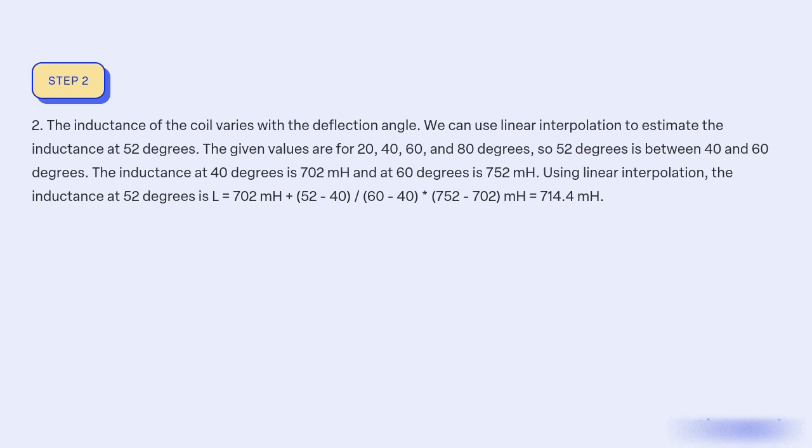The given values are for 20, 40, 60, and 80 degrees, so 52 degrees is between 40 and 60 degrees. The inductance at 40 degrees is 702 mH and at 60 degrees is 752 mH. Using linear interpolation, the inductance at 52 degrees is L = 702 mH + [(52-40)/(60-40)] × (752-702) mH = 714.4 mH.